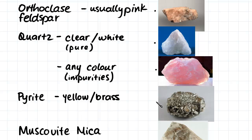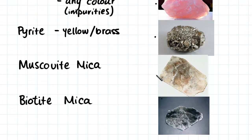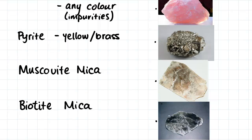Pyrite is always presented as usually a yellow or a brassy metallic colour. Muscovite mica is often a light colour, a sort of beige or yellowy colour, and biotite mica will come often in a grey or a black colour.